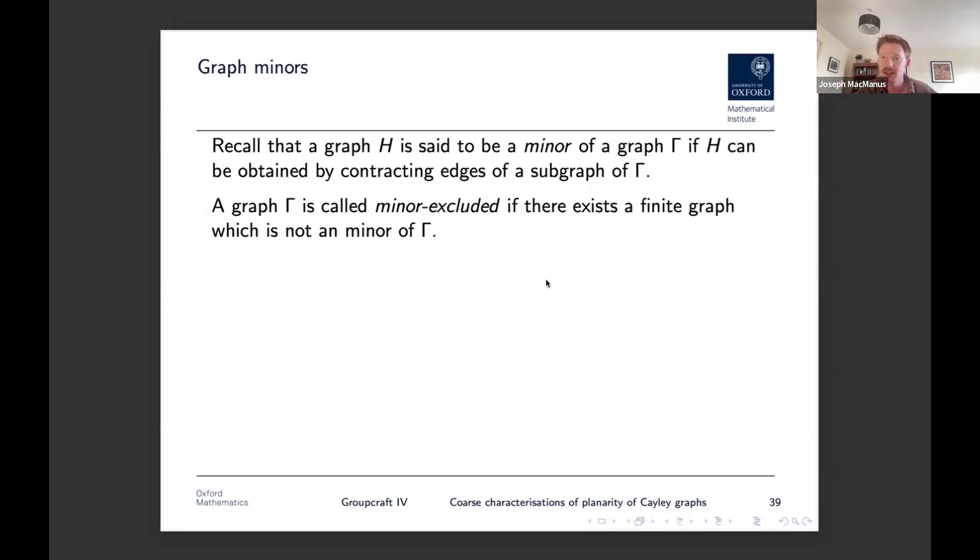But if you take like a three-dimensional lattice, this is obviously not going to be minor excluded. It's somehow too big and you can start to draw any finite graph you want in there. There's enough space. And minor exclusion does have some consequences for Cayley graphs, which are worth mentioning here. So firstly, we have some theorem of Anakukro, which says that if every Cayley graph of a group G is minor excluded, but it turns out that your group is virtually free and vice versa. So this is an if and only if statement, which completely characterizes the virtually free groups.